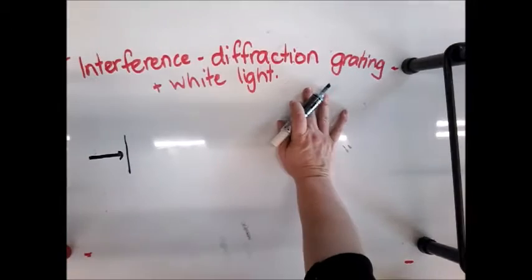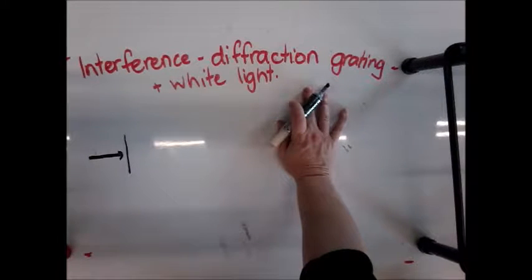So a little side note here on diffraction gratings is what happens when you put white light through them. Most of the time we're concerned with what happens with diffraction gratings when you put monochromatic light, i.e. light from a laser, through a diffraction grating.